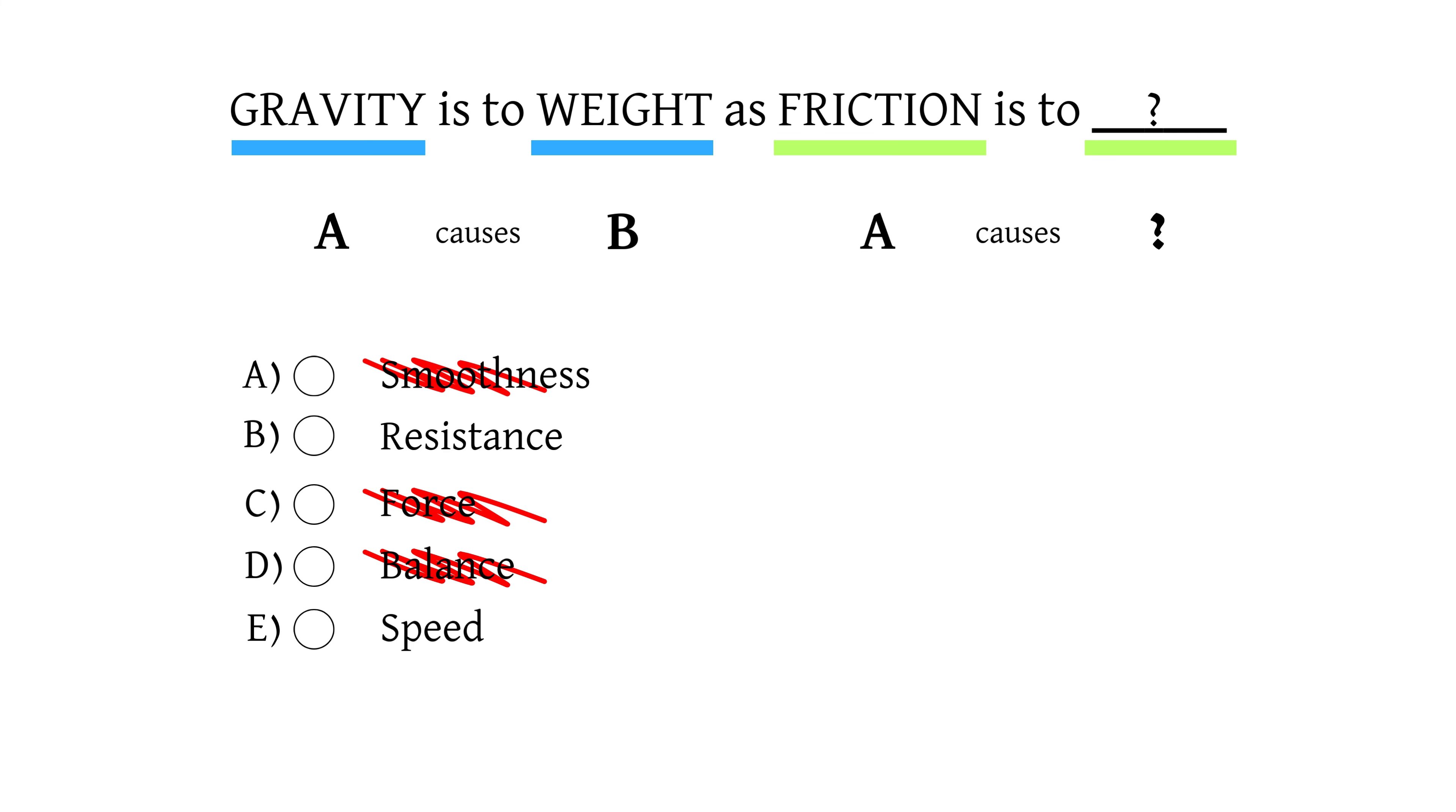And the final one is speed. Friction affects speed but doesn't define the effect in a way resistance does. And for this reason, we'll eliminate option E.